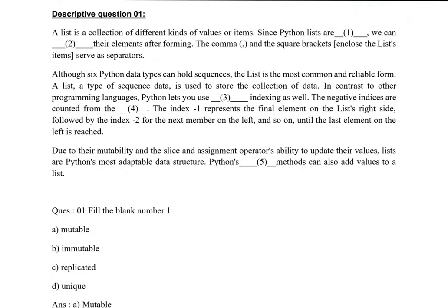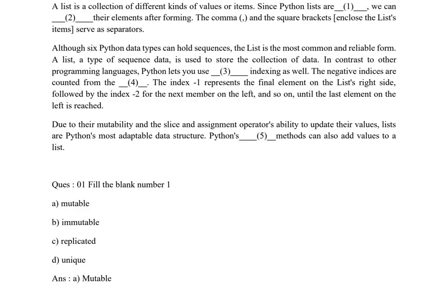Let's move to the first question. Here the first question is asking: fill the blank number one. So here you can see: since Python lists are dash - mutable, immutable, replicated, or unique. So Python lists are mutable.